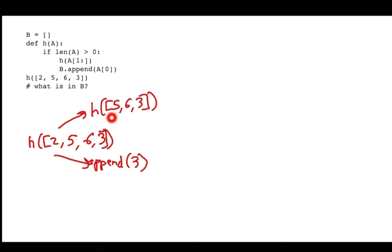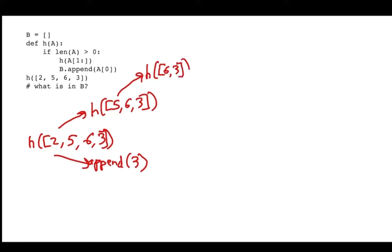What happens when I call H on the smaller list — 5, 6, 3? This becomes my A, and the length is greater than zero. The first thing I do is call myself again on a slice starting at position one, which gives me 6 and 3. So I call H of 6, 3. Then the next thing I do is append A[0], which for me is 5 — so I append 5.